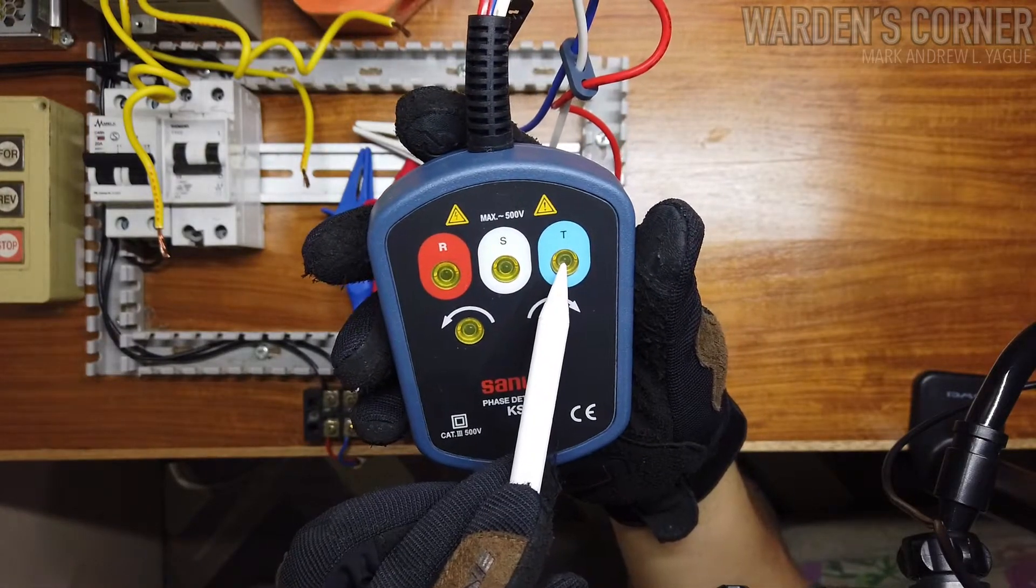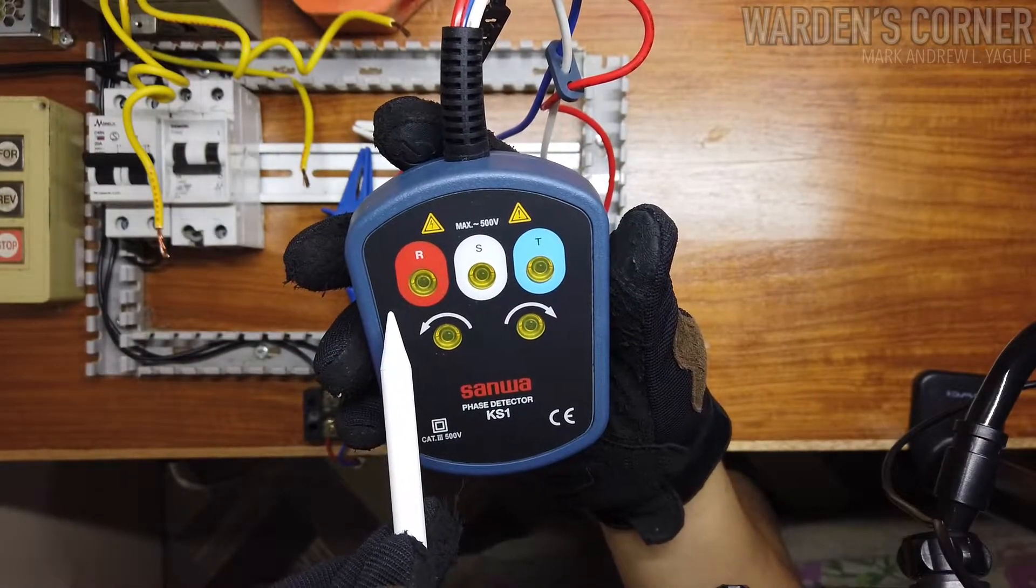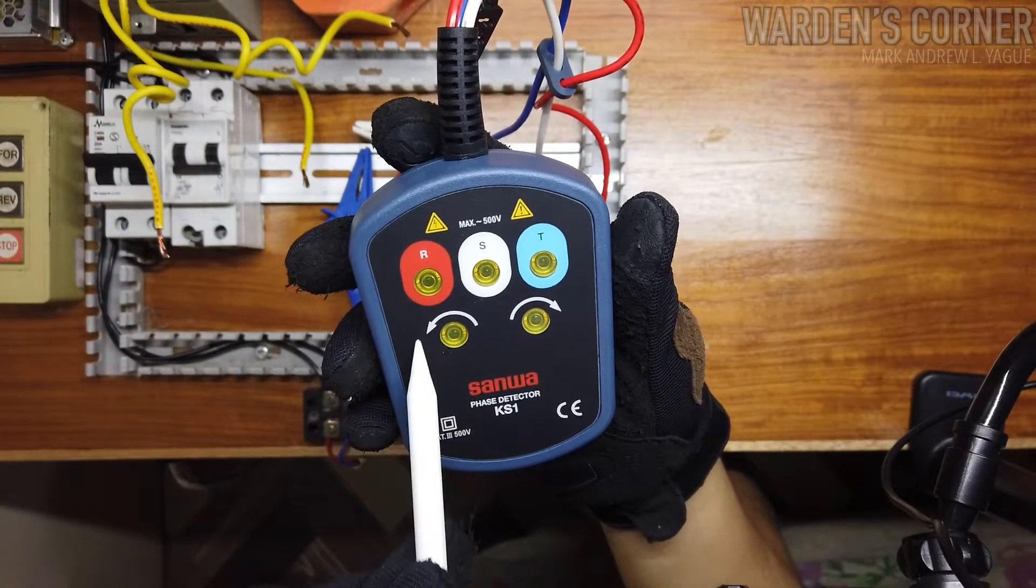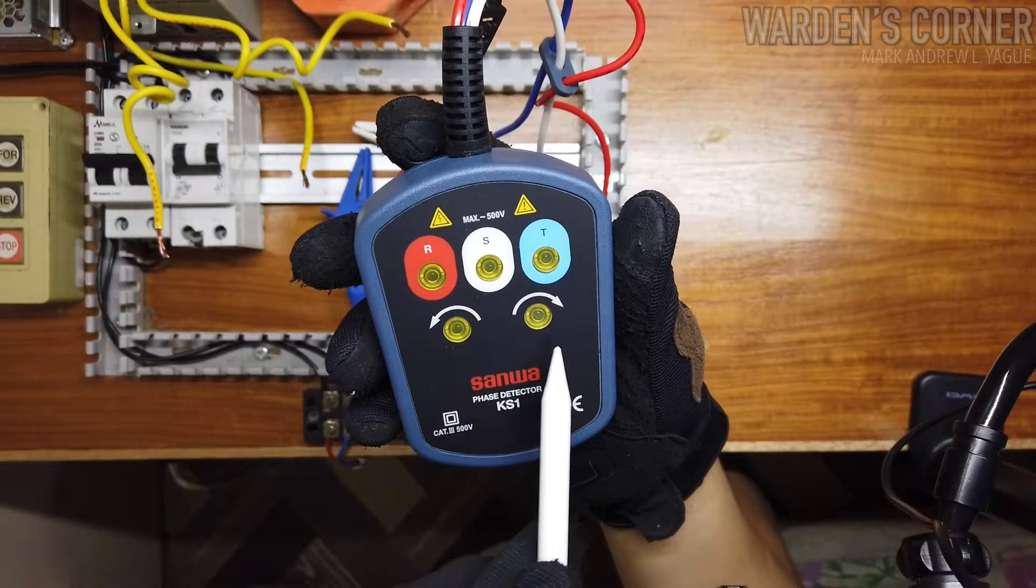We have RST that is equivalent to line 1, line 2, and line 3, which is the open phase indicator. And it has a phase rotation indicator for counterclockwise or reverse direction and clockwise or forward direction.